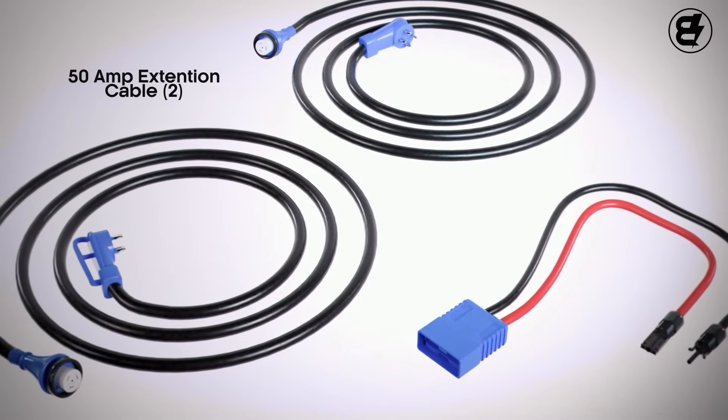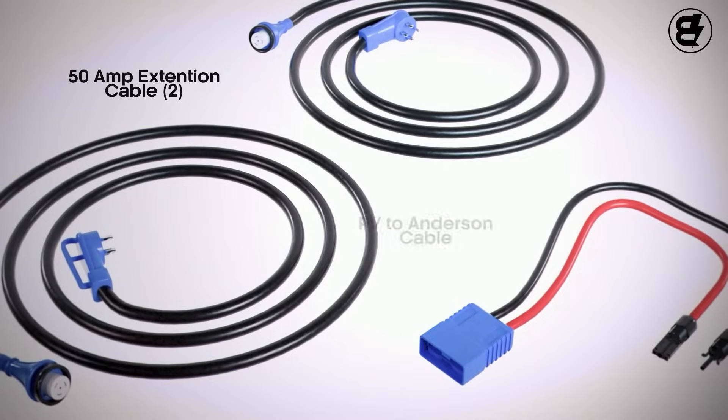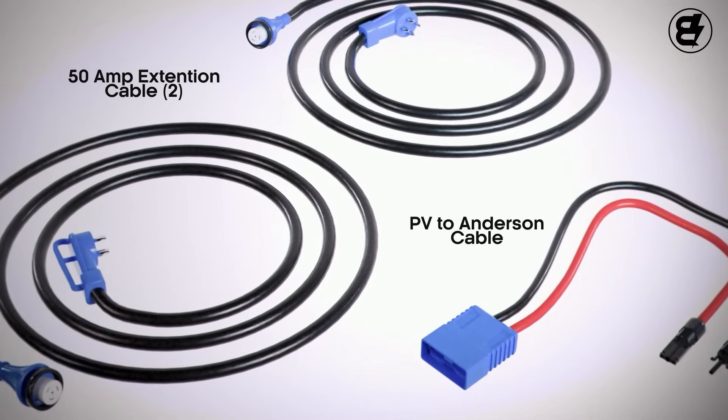Your Walrus comes with two 50-amp NEMA extension cables, as well as the necessary PV to Anderson cables to connect to solar.